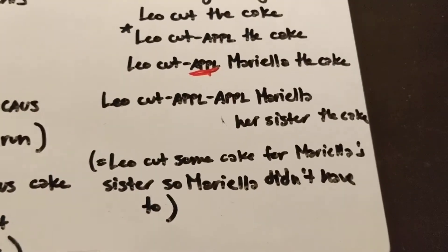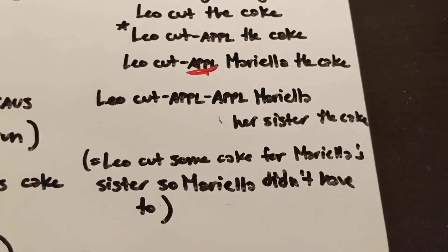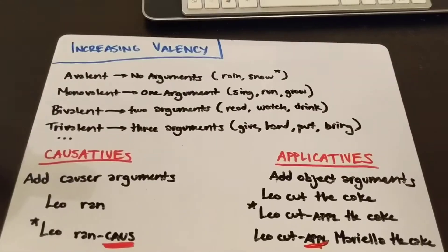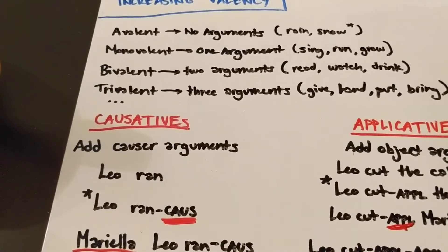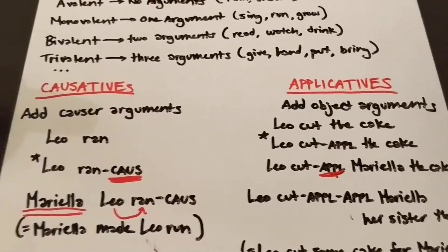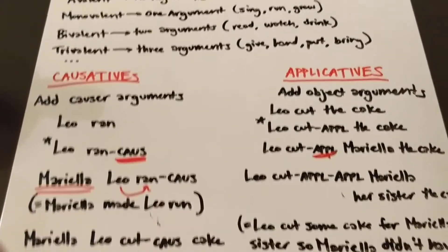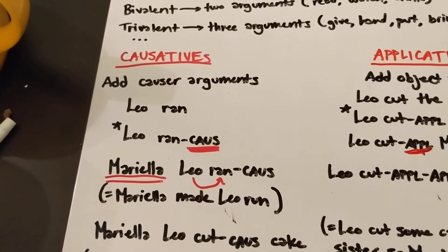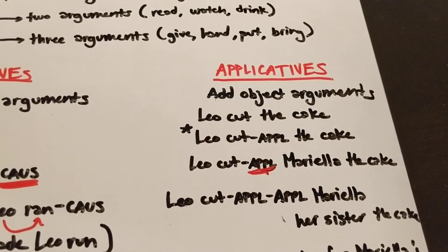A lot of Bantu languages have these very huge stacks of applicatives. So essentially if you want to increase the valency, you either have to increase the number of subjects or the number of objects and the interpretation of those is going to be language dependent, but you call it a causative if you're adding subjects and an applicative if you're adding objects.